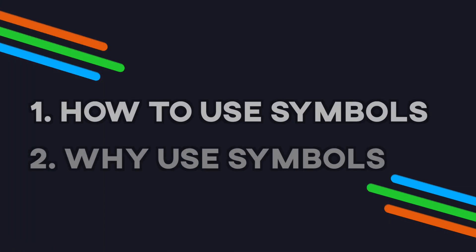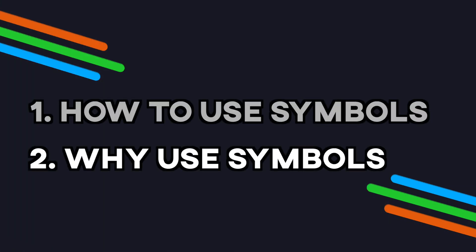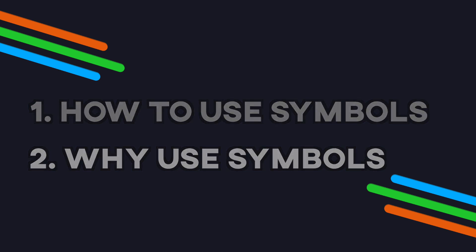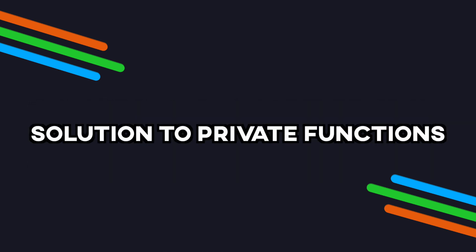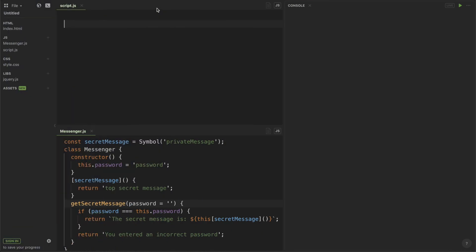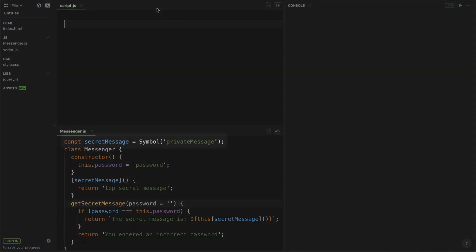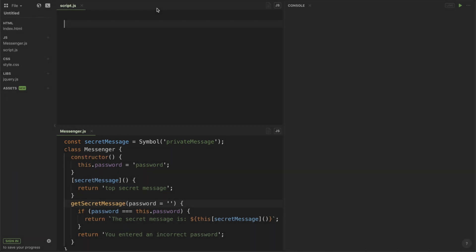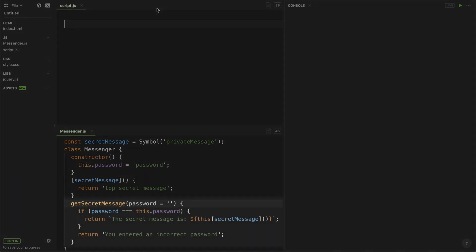Now that we covered how Symbols should be used, we should cover why they are being used. Symbols were initially thought of as the solution to private functions in JavaScript. So here I create a secret message Symbol, and I pass in the description 'private message', and then I create a new class Messenger. Then I have my getSecretMessage function, which takes in a password.